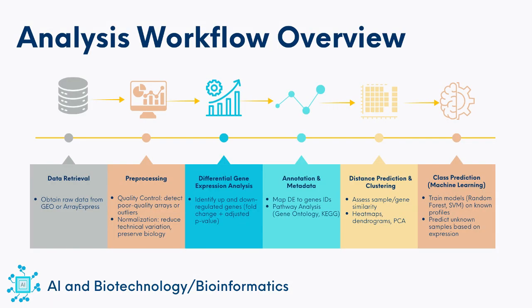The workflow we will follow in this module has several steps, and each step builds on the one before it. We begin with data retrieval, using publicly available datasets downloaded from public databases such as NCBI-GEO or ArrayExpress. Starting with raw data is important because it allows us to perform a fully reproducible analysis from the ground up. Once we have the raw data, the next step is preprocessing, which involves two main tasks: quality control, where we check the quality of the arrays and identify outlier samples; and normalization, where we reduce technical variation across arrays while preserving biological differences.